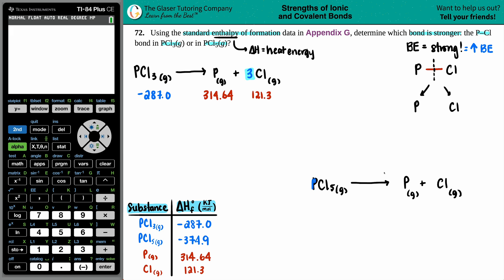Let's make sure that the equations are balanced. You have one phosphorus, so one phosphorus, but now you got five chlorines. So we're going to have to put a five right in front of the chlorine. Now let's put the numbers. PCl5 is negative 374.9, and then the P, just like before, is 314.64, and the Cl is 121.3.